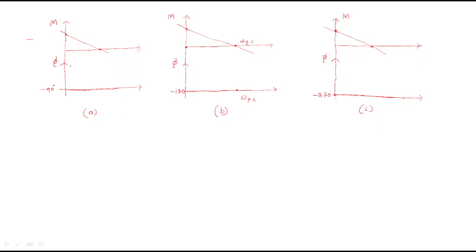Look at the first problem. The magnitude plot touches 0 dB — that is the gain crossover frequency. The phase is directly given as minus 90 degrees. Now look at the phase crossover frequency for plot A.